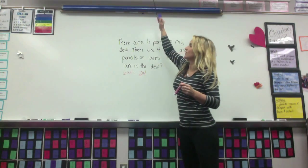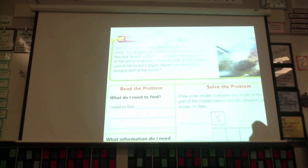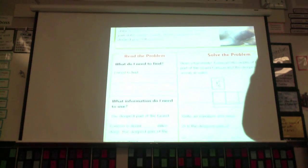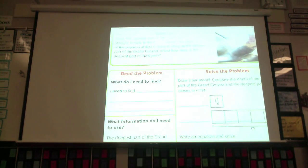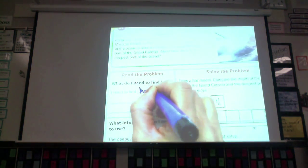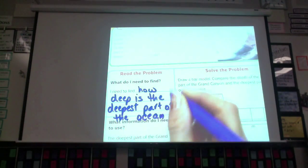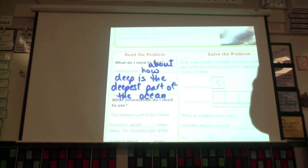Go ahead and open to 8-5 if you're not already there. The deepest part of the Grand Canyon is about one and one-sixth mile deep. The deepest part of the ocean is located in the Mariana Trench in the Pacific Ocean. The deepest part of the ocean is almost six times as deep as the deepest part of the Grand Canyon. About how deep is the deepest part of the ocean? So, what do I need to find out? Go back to the question and find out what I need to find out. Benny? Right, how deep? And I'm going to throw in the word about here to remind us that this is not an exact. We're working with estimates or approximates.